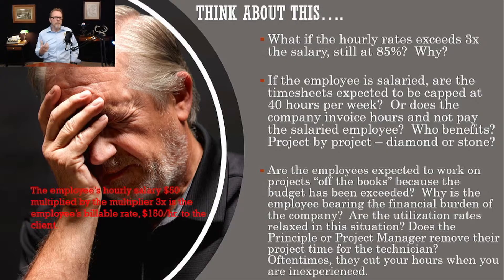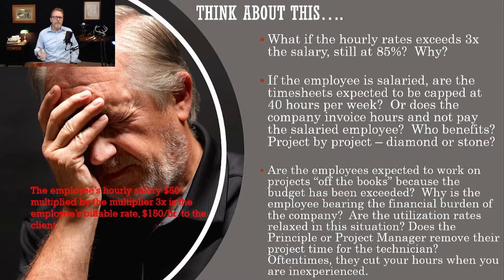Here's something to think about. What if your billable hourly rate exceeds a 3.0 multiplier? Let's use $30 an hour — your multiplier would put you at $90 an hour billable. If the company is billing you at $150, why aren't they relaxing your utilization rate a little bit and taking the opportunity to mentor you? That seldom happens. They usually maintain that rate. That means that 20% profit is driving that company more than your personal development. That's just a fact — it's in the numbers.